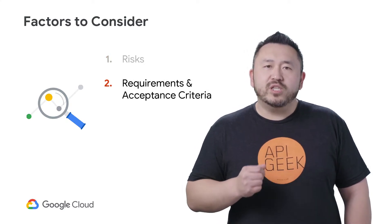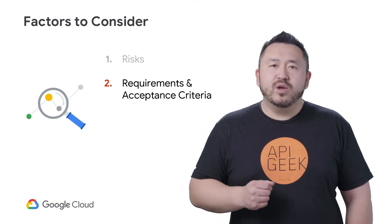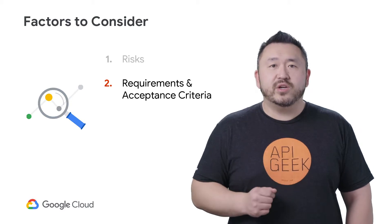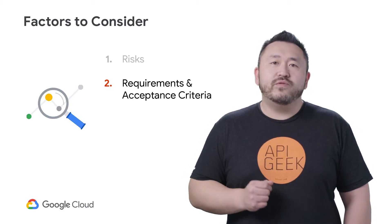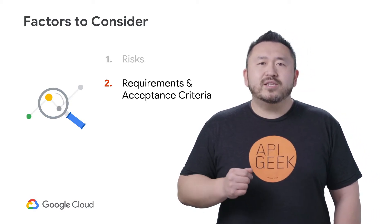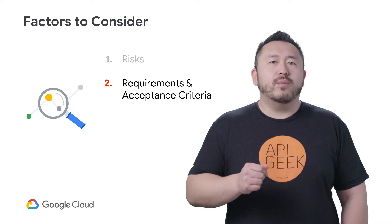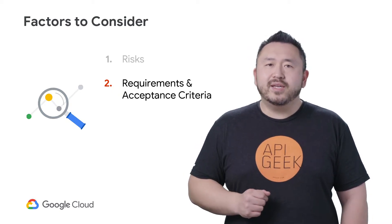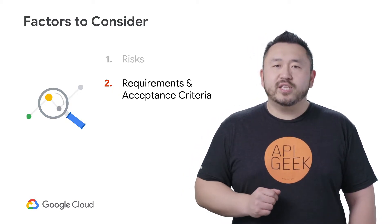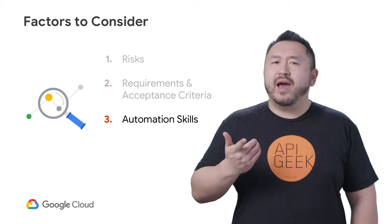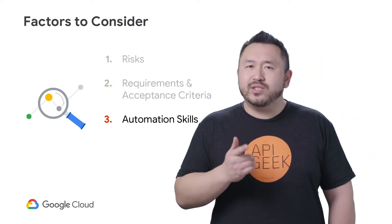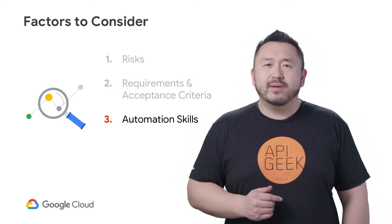Be sure that your team understands what the objectives, requirements, and acceptance criteria are for new features and changes to your APIs. The key is to make sure your requirements are clearly aligned with your business needs and stakeholders' expectations. Does your team have the right technical skills and capacity to ensure quality assurance is being met?